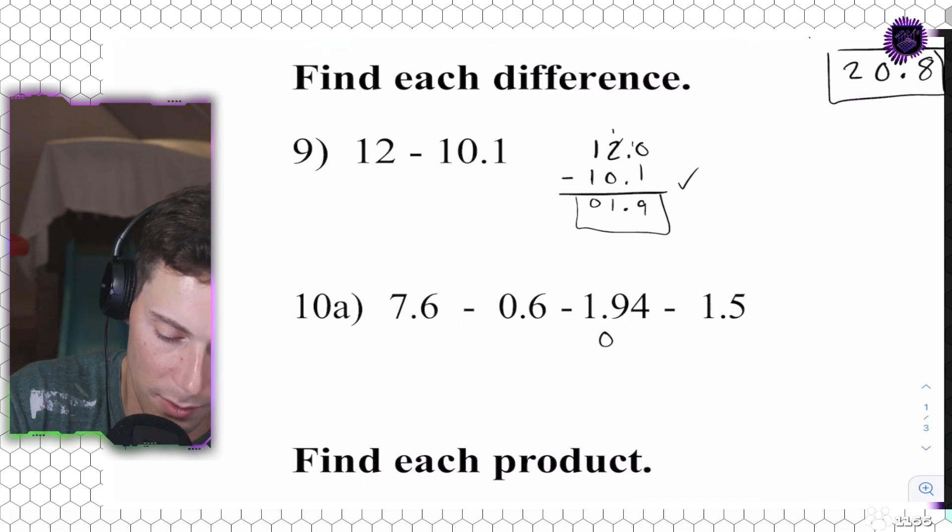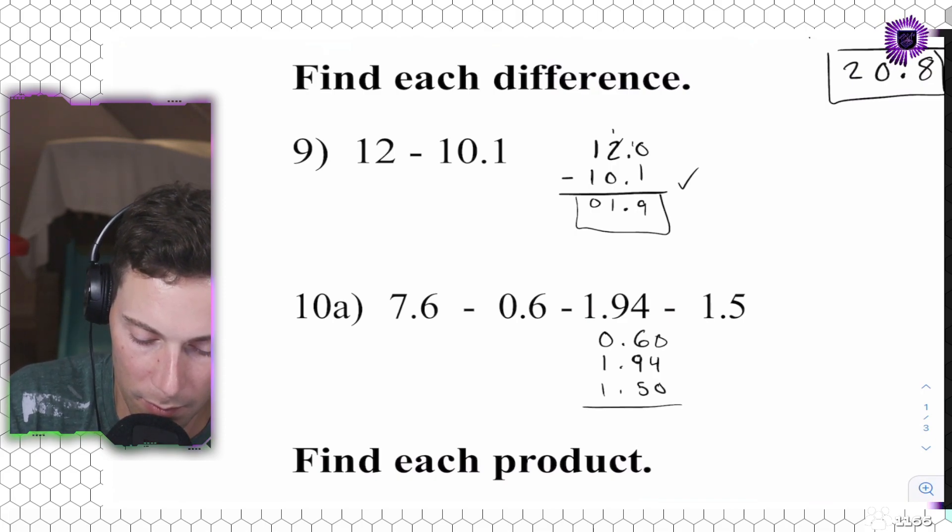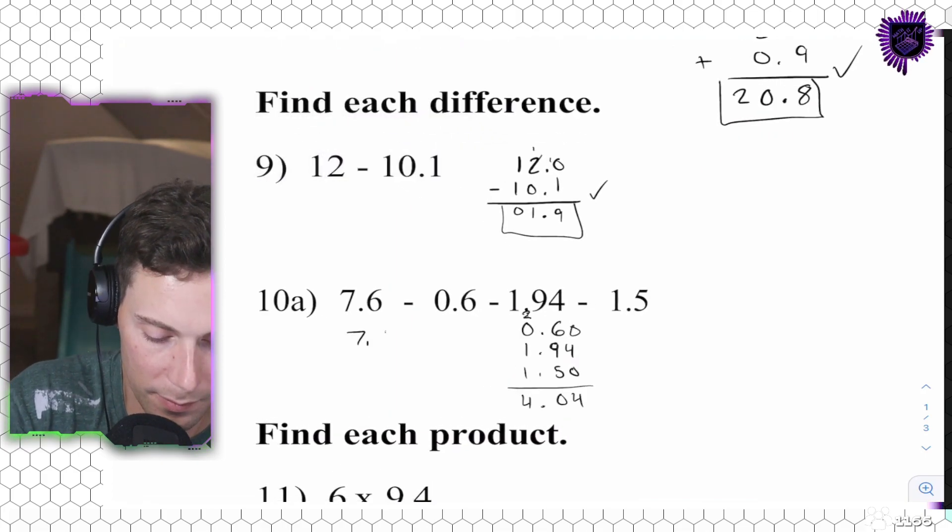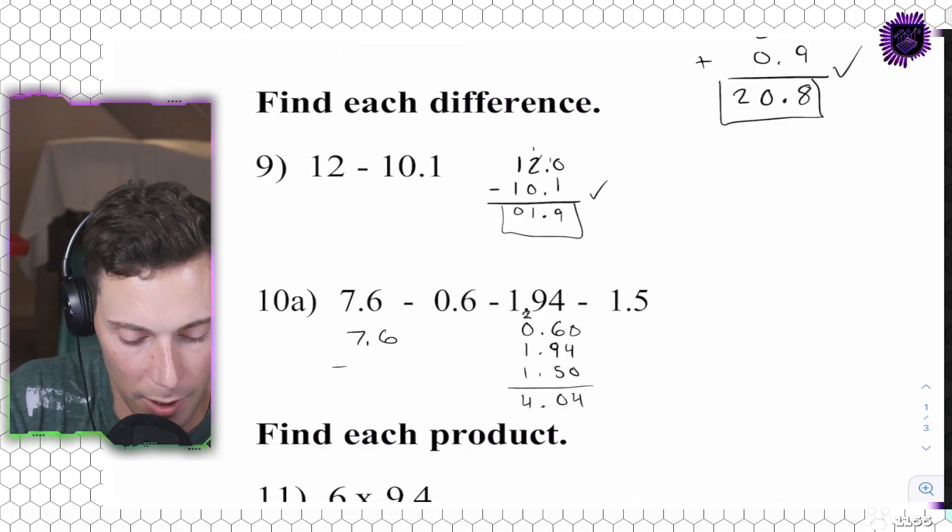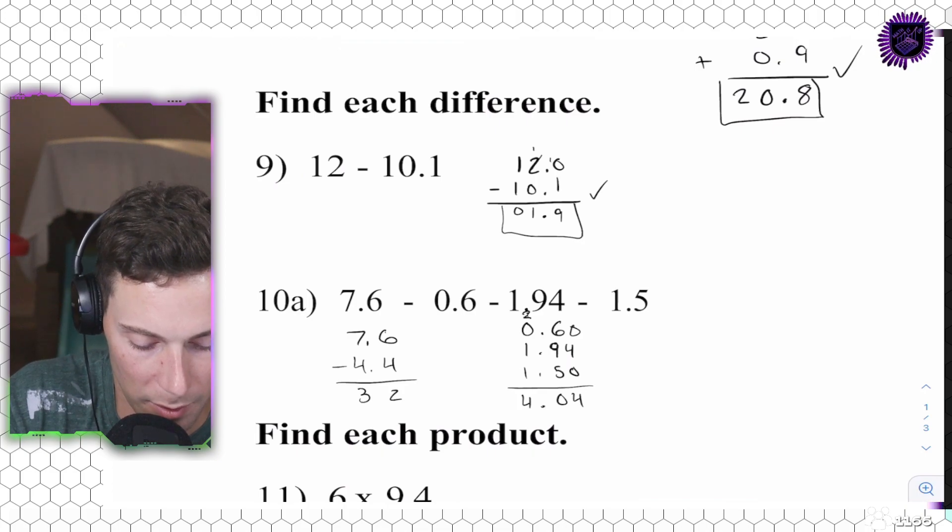So, I'm going to do like this. Subtract. This is what it would look like with order of operations. Those three, just to keep it simpler. Okay. So, 0.6, 1.94, and 1.5. That's a 9. So, 4, 15, 20, 0. Carry the 2, 4.4. So, it's going to be 7.6 minus 4.4. That's going to be 2. That's going to be 3. Drop down.